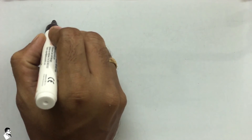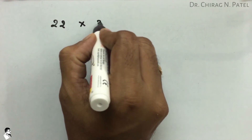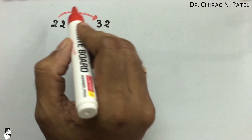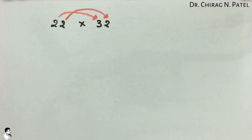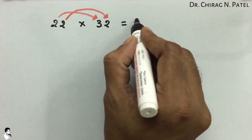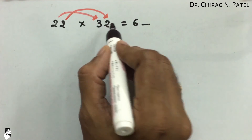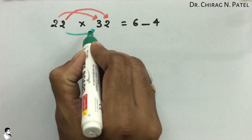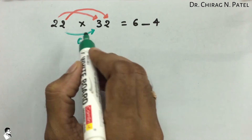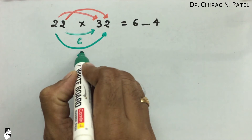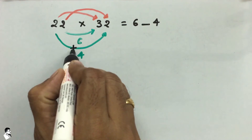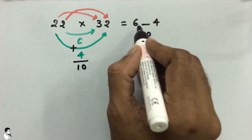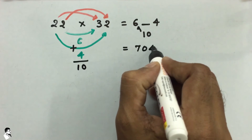Another example: 22 multiplied by 32. Take 2 into 3, which equals 6, and 2 into 2, which is 4. For the middle: 2 into 3 is 6 and 2 into 2 is 4; their sum is 10. Write down 10 here and carry the 1 forward to 6, making 7. The answer is 704.